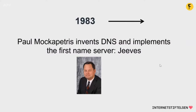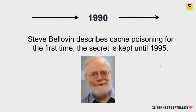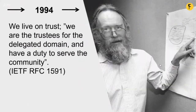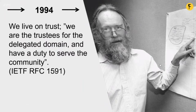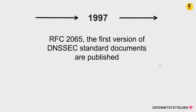It didn't take long before someone found serious weaknesses in the DNS protocol. In 1990, Steve Bellovin described cache poisoning for the first time, but the secret was kept until 1995. In 1994, RFC 1591 states the top-level domain responsibilities. John Purcell discovered an ISO standard with country codes, ISO 3166, for two-letter codes used for postal purposes that could also organize DNS geographically rather than functionally — and the country code top-level domains were born. In 1997, the first version of DNS standard documents were published, and a 1999 workshop proved that nothing worked and engineers had to get back to the drawing board.